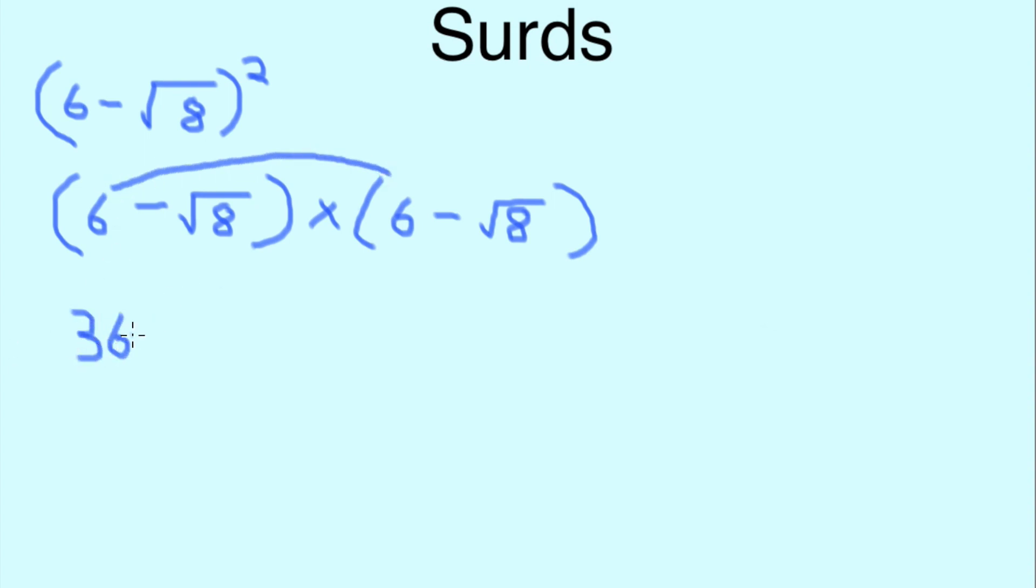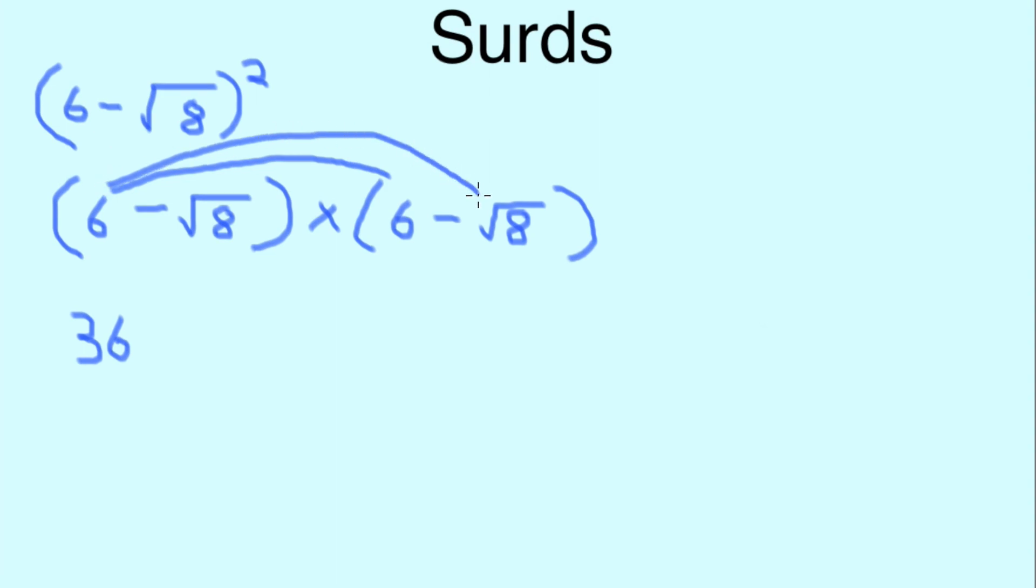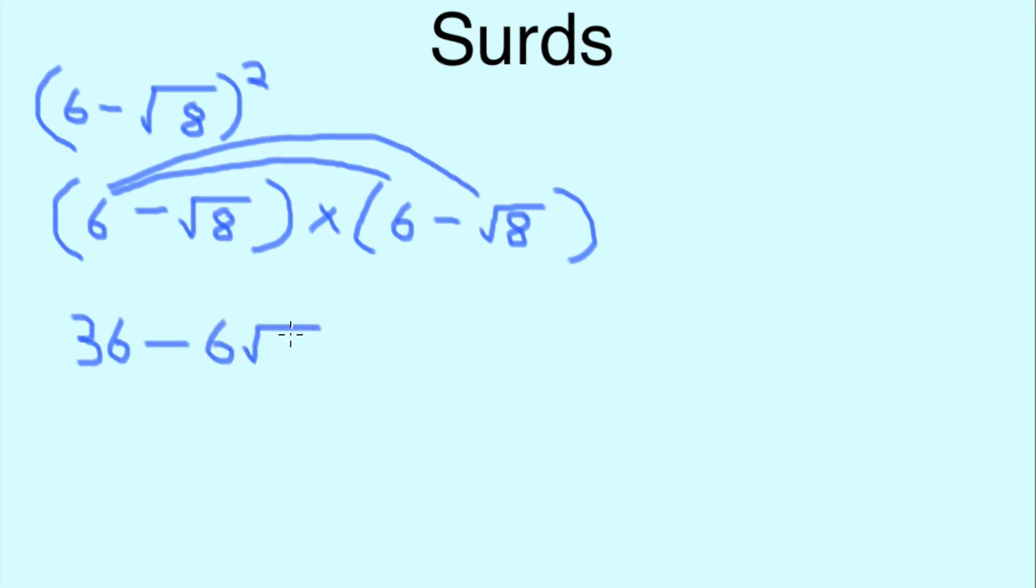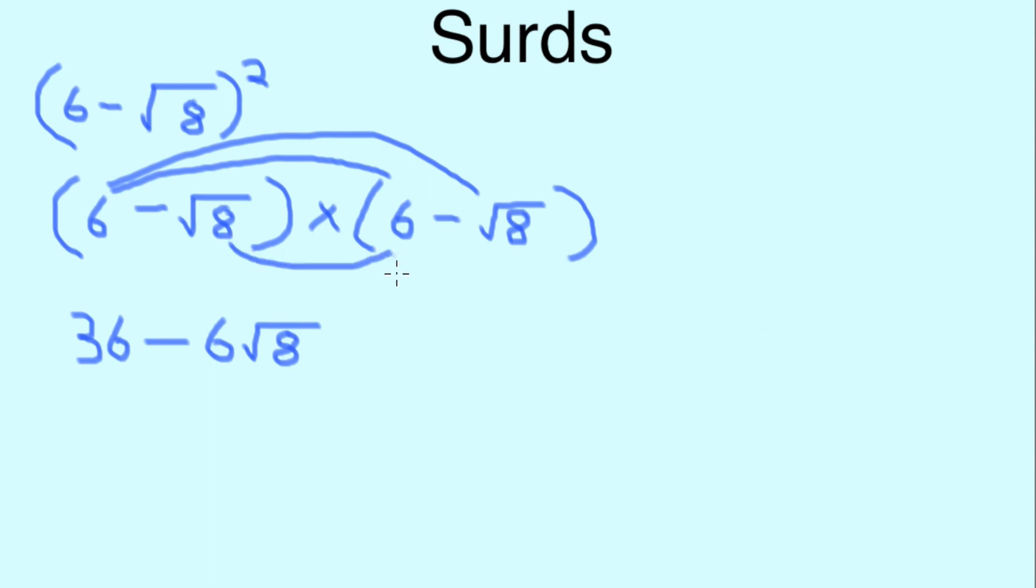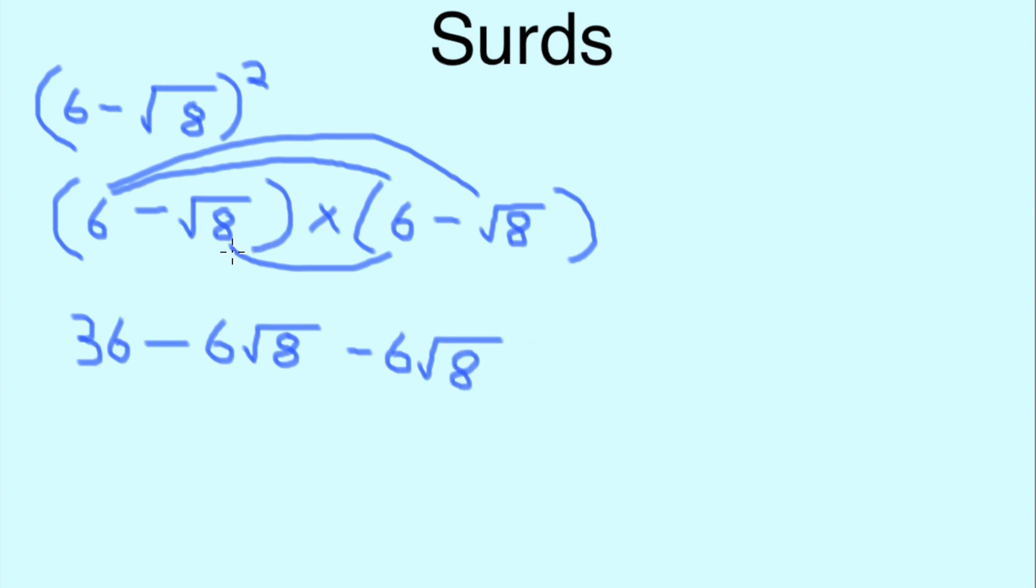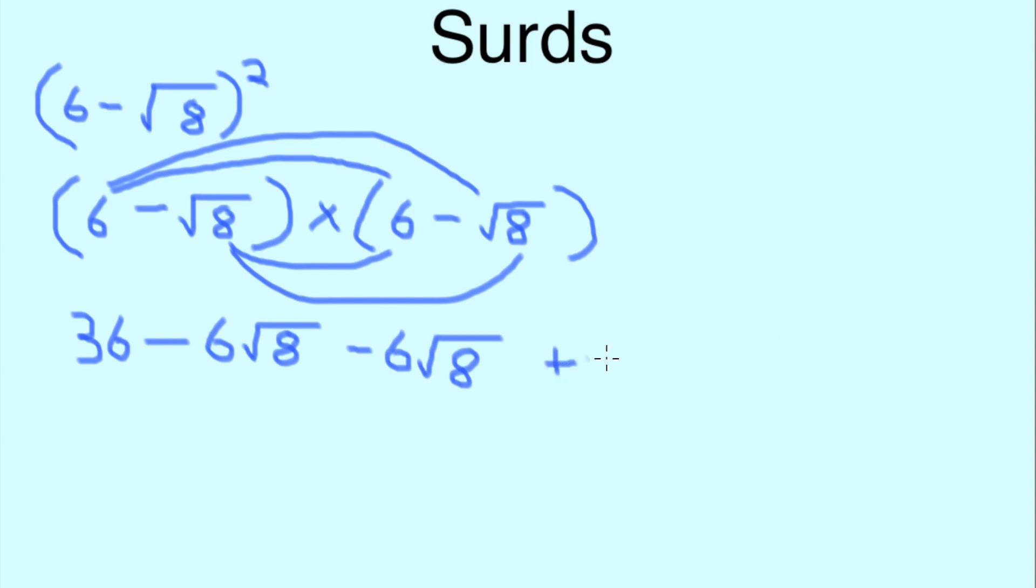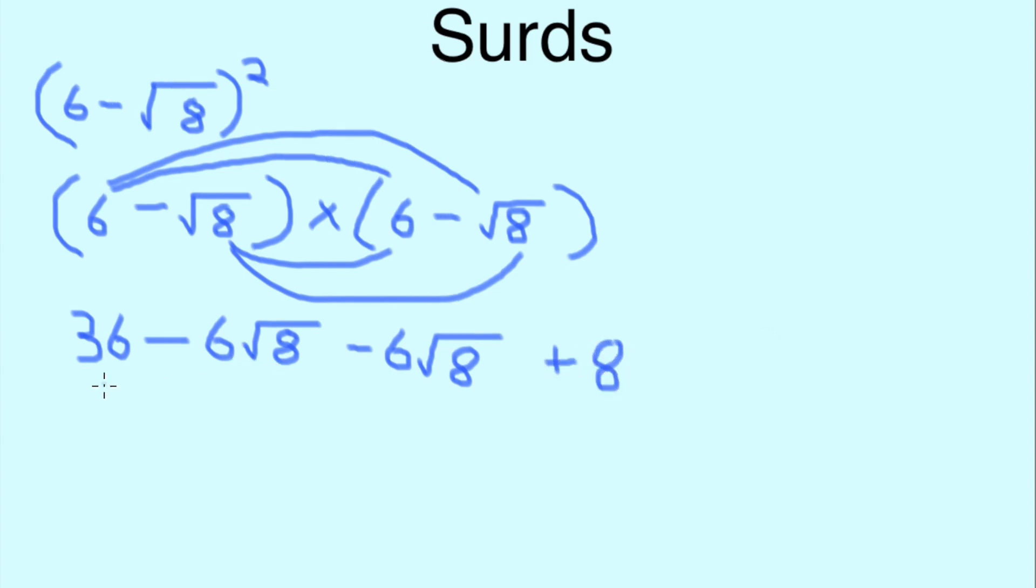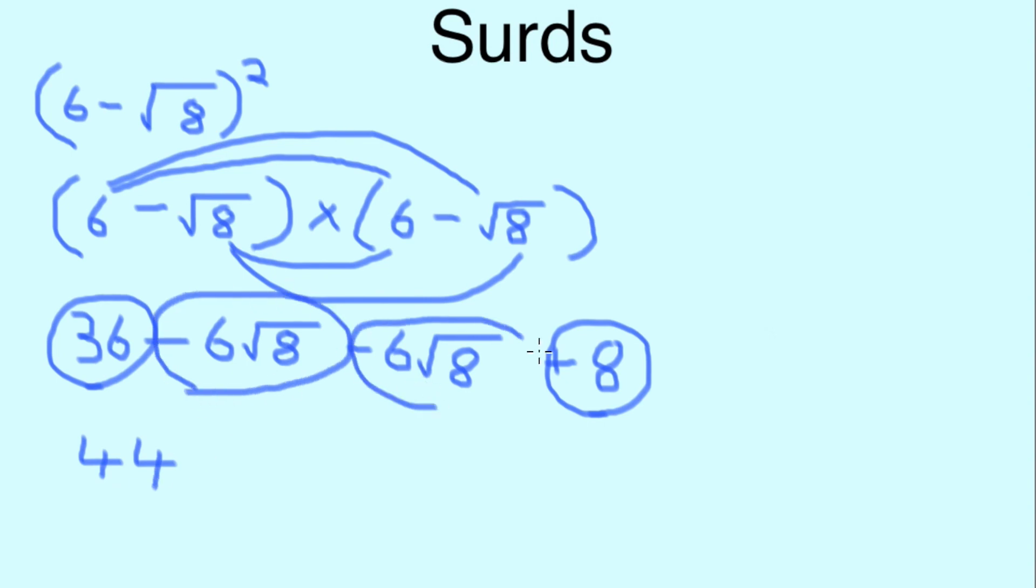6 times √8, because it's a minus, gives us -6√8. We have -√8 times 6, which is still -6√8. And when you have two minuses times each other, that's a plus. And √8 times √8 is simply 8. So carrying on, we add 36 to 8, and -6√8 plus -6√8 is -12√8. So the answer is 44 - 12√8.